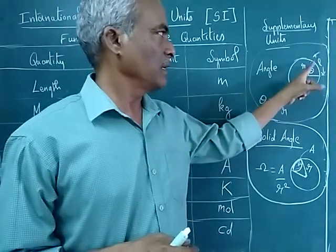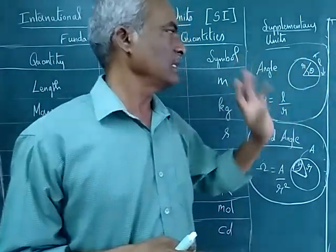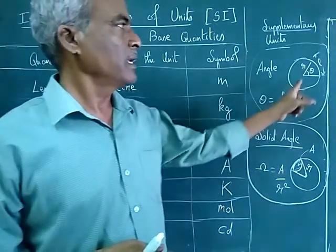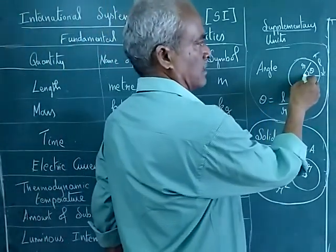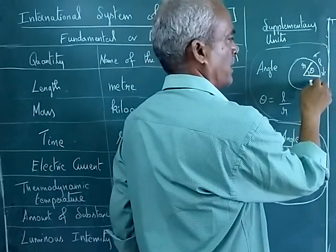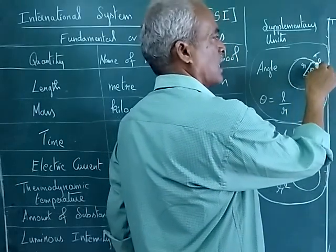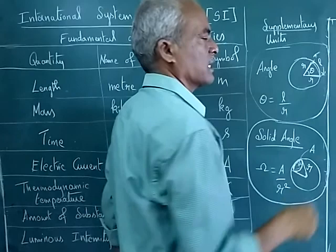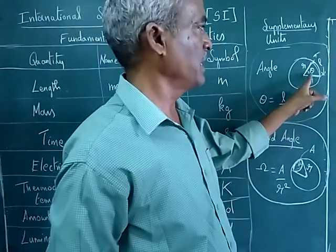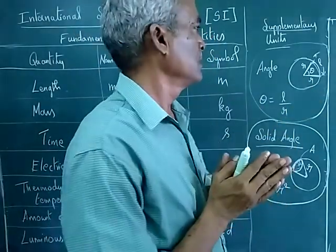So the angle is, you are considering a circle. In that, this is the radius R. Here again we have radius, and this is the arc length. The length of the arc is L, and we have theta, the angle.